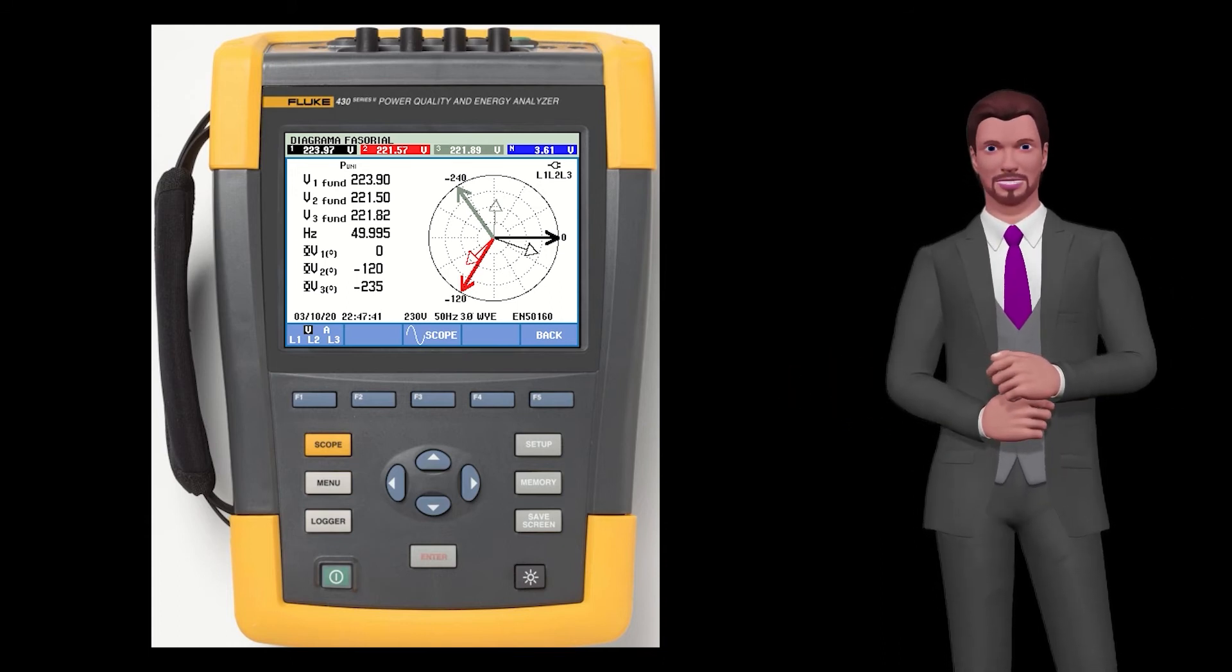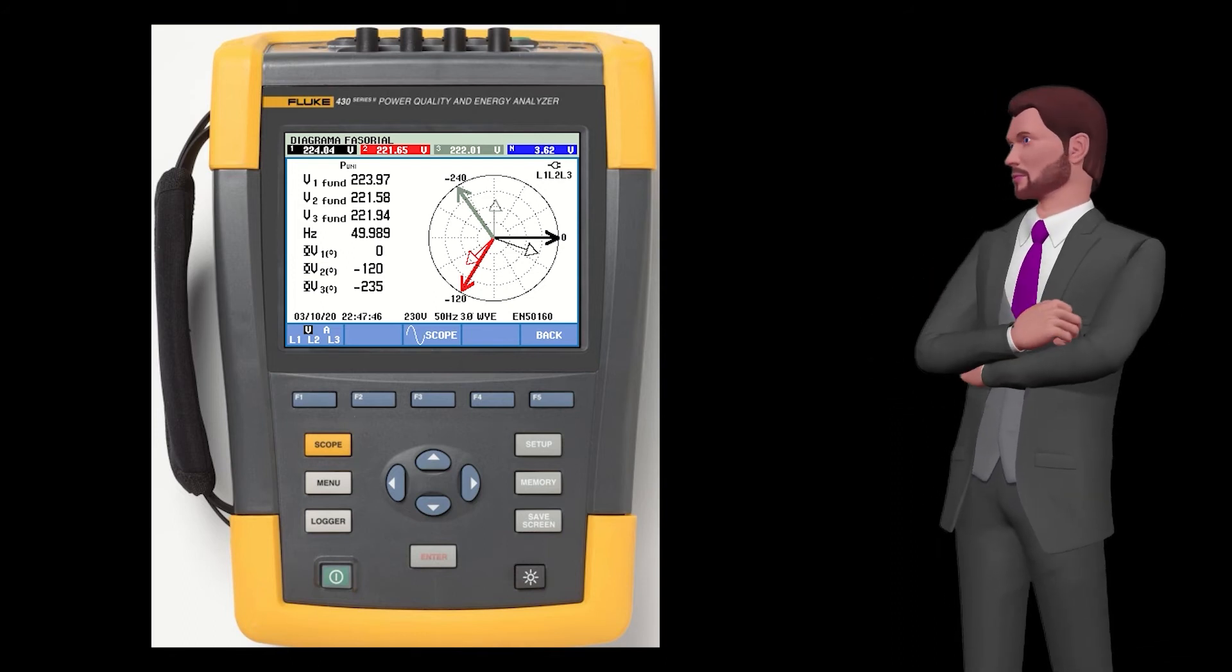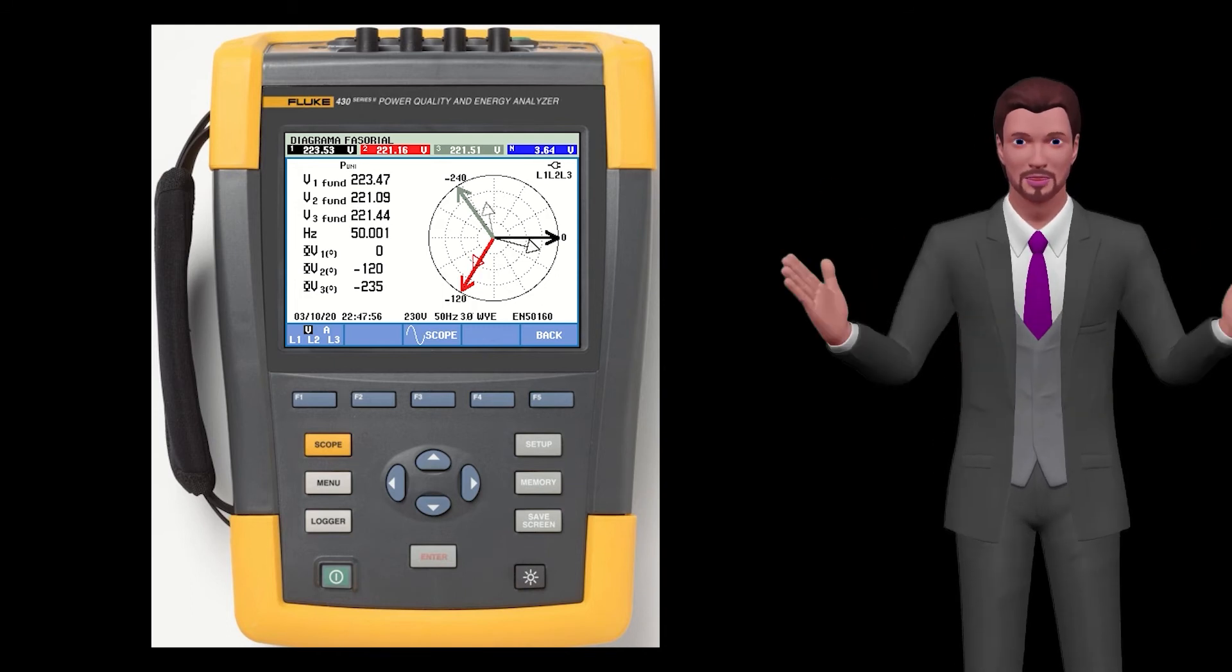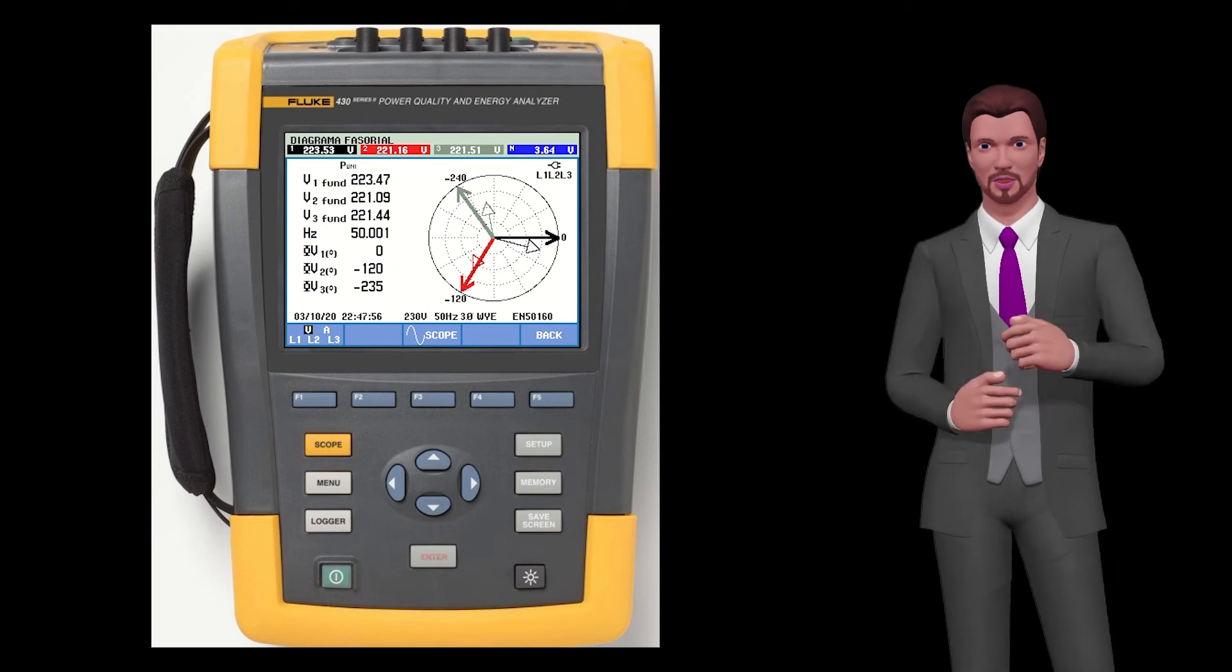Likewise, we can see that the current vectors are relatively close to the corresponding voltage vectors, as indicated, depending on the cosine of phi of each phase, but always forming an angle of less than 90 degrees. This is also a good sign of a correct installation of the analyzer.